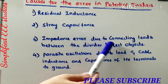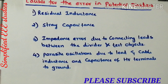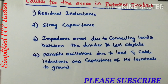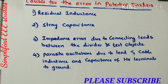The third reason is impedance error due to connecting leads between the divider and the test object. Obviously, you need to connect the low voltage arm to the measurement device, and in between you require connecting leads or wires. The impedance of the connecting leads will cause errors — it may cause a certain voltage drop. That voltage drop among the total voltage should be reduced. Because of the connecting leads, there will be impedance, which results in a voltage drop and you will get a wrong reading.